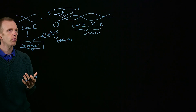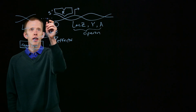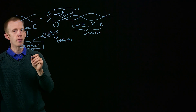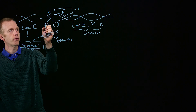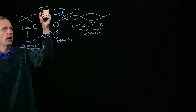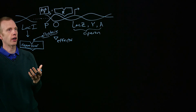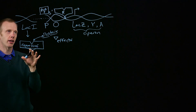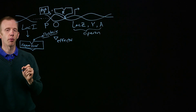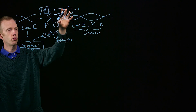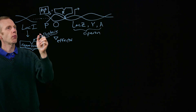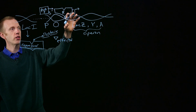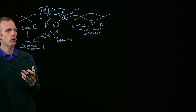The binding of lac repressor to the operator prevents transcription — it represses transcription. Upstream of the operator is the promoter, where RNA polymerase binds. If the repressor is tightly bound to the operator, it physically blocks RNA polymerase from moving past and reaching the transcription start site where RNA polymerase would start transcribing the operon.